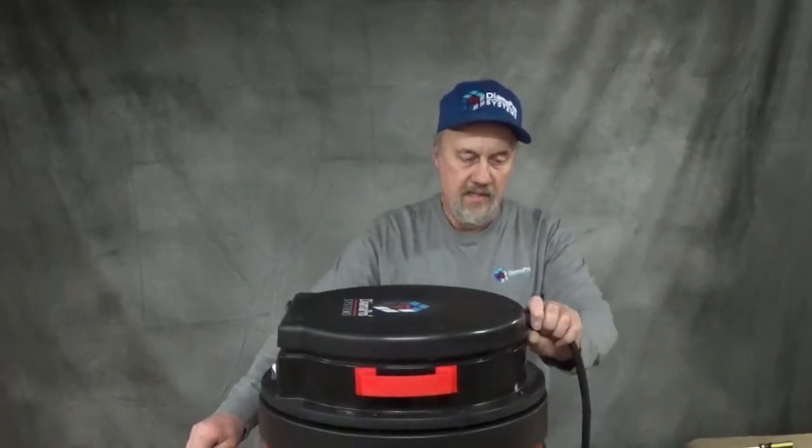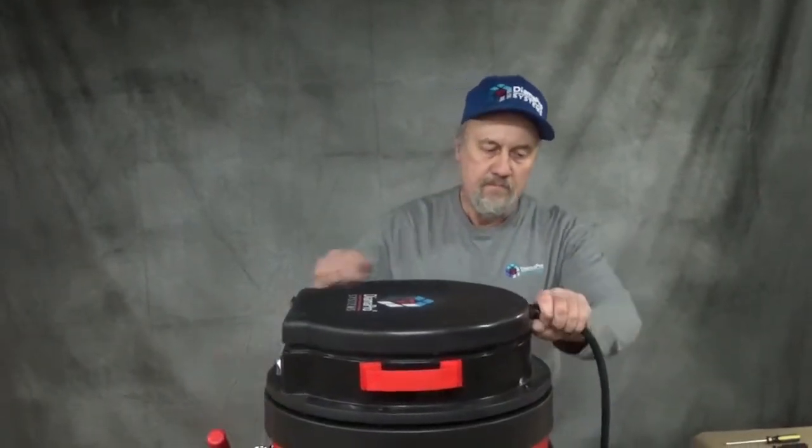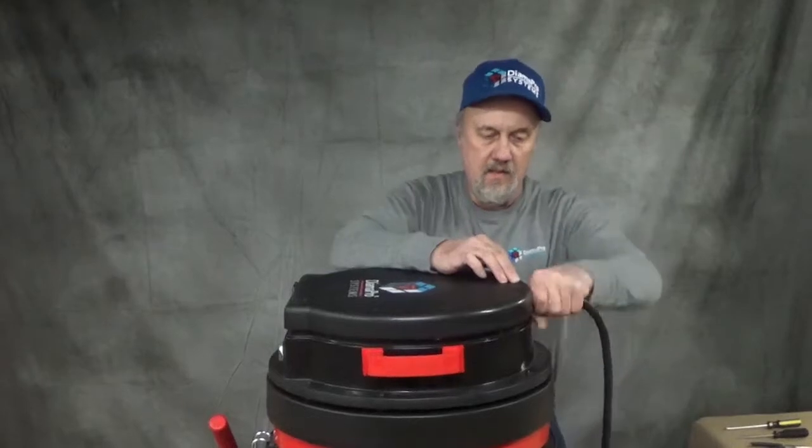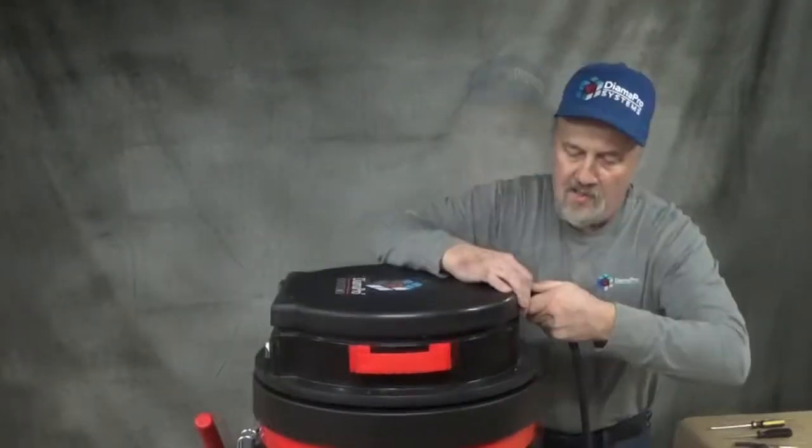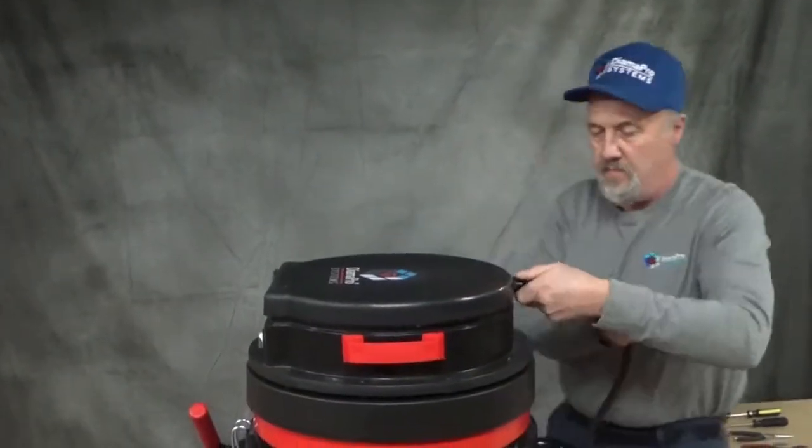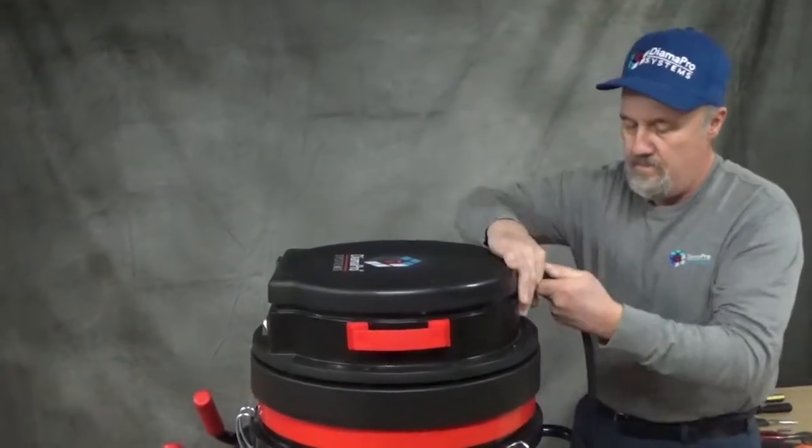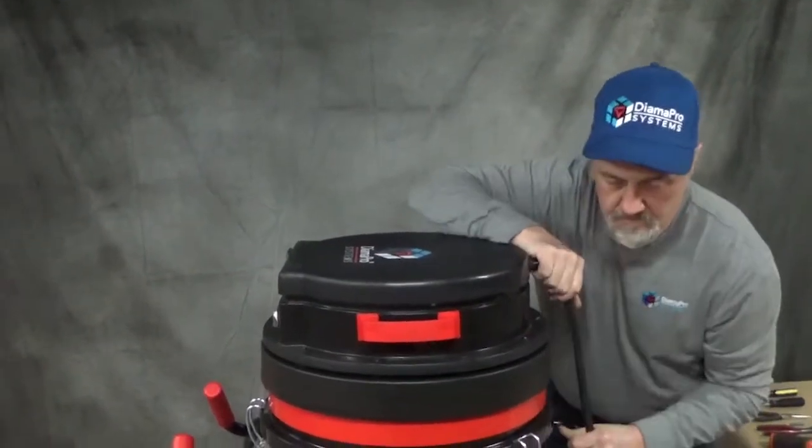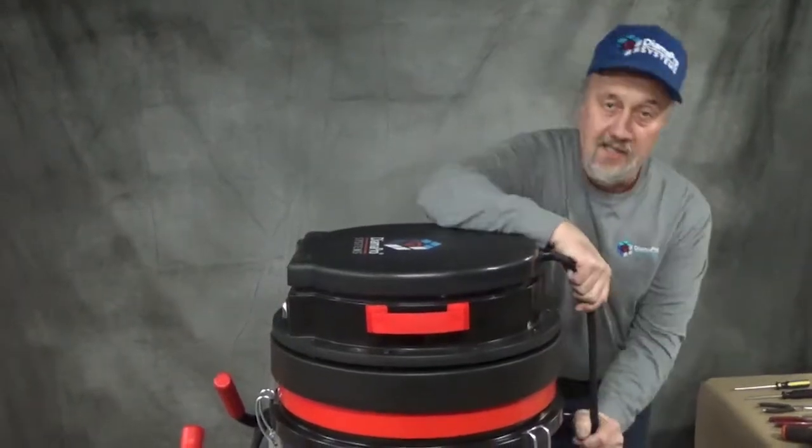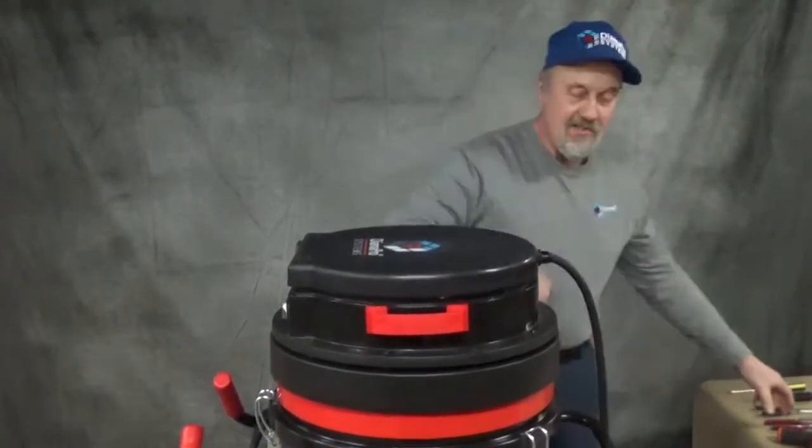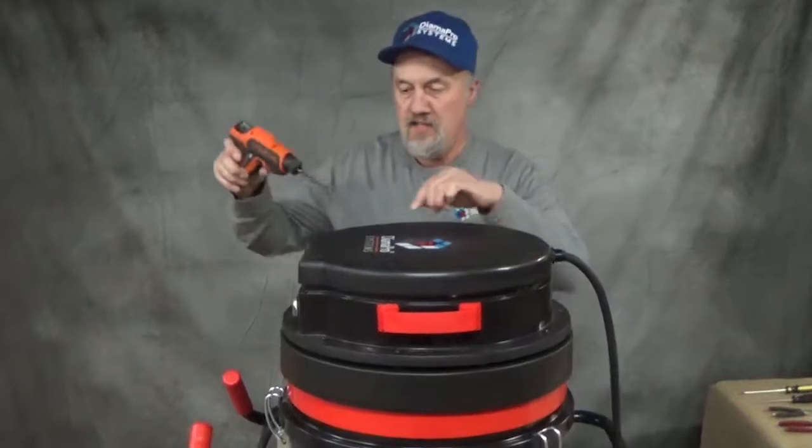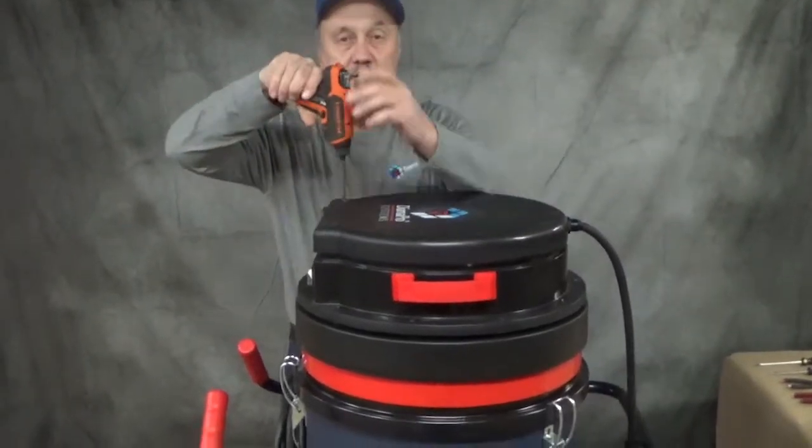First, we'll start out by loosening up this cord grip from the top cover and sliding it on the cord out of your way. Helpful hint. Next, we're going to be removing the eight screws that attach the top cover.